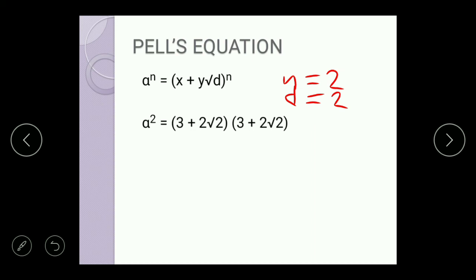So let us simplify using the FOIL method. So 3 times 3 equals 9, and 3 times 2 square root of 2 equals 6 square root of 2, and 2 square root of 2 times 3 equals 6 square root of 2.